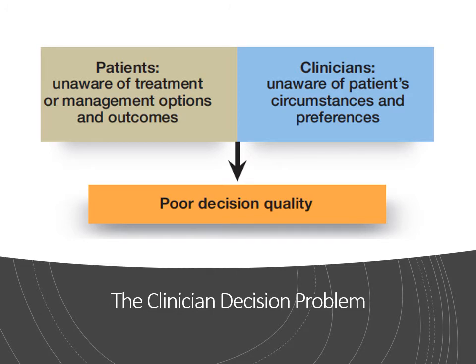Poor decision quality occurs when we don't communicate the way we need to. Patients are unaware of their treatment options and don't understand the outcomes of those decisions. The clinician is unaware of the patient's circumstances and preferences. A lot of times clinicians don't ask what barriers are holding the patient back from making a decision or why they don't want treatment. If we understand why, we're better equipped to make it a feasible thing for them.